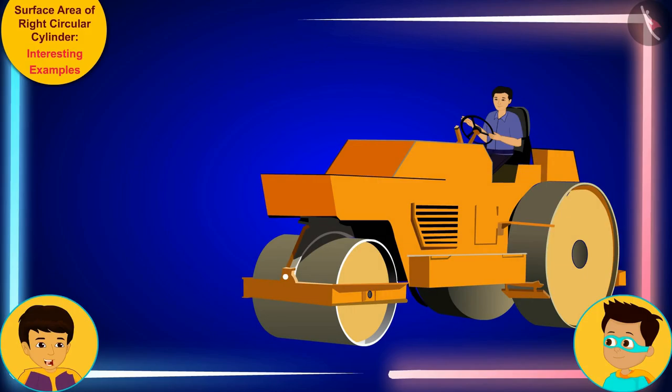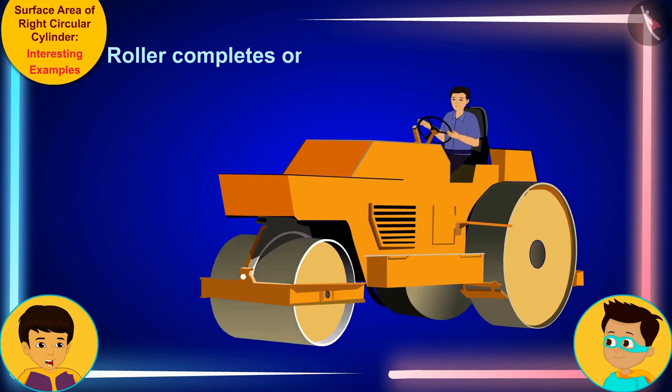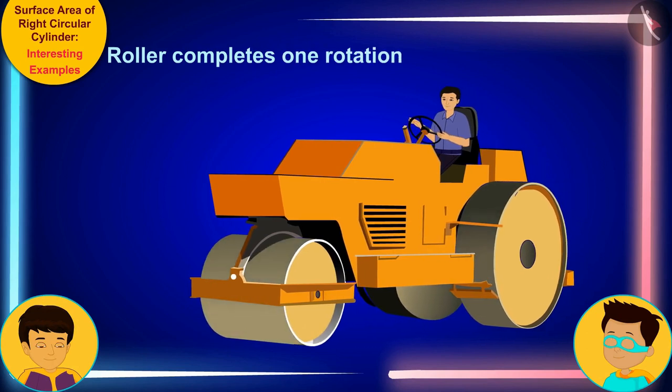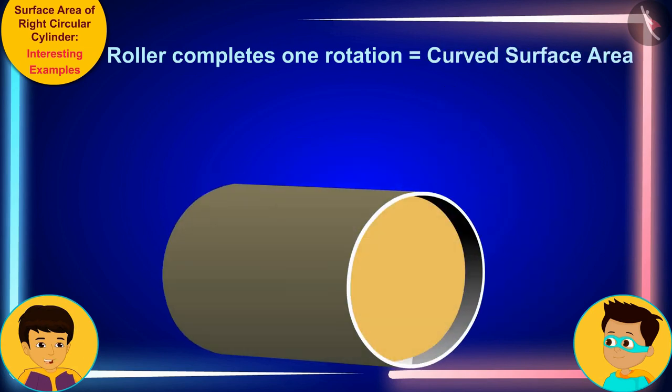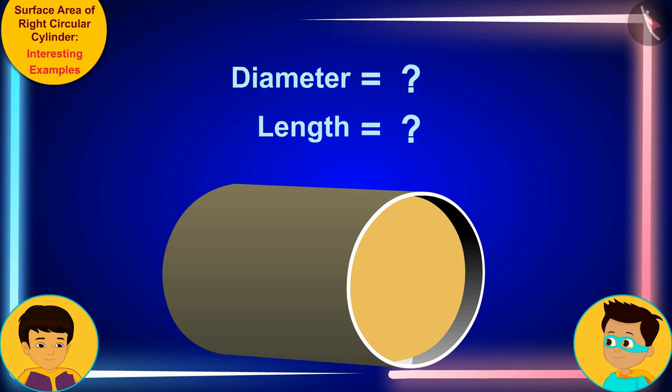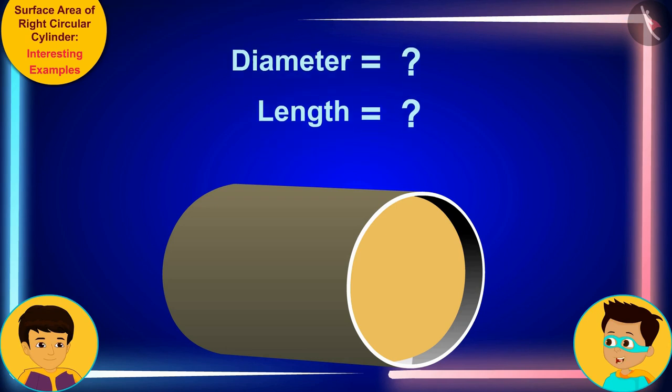Look Thomas, when the roller completes one rotation, it flattens the area of the field equal to its curved surface area. Can you tell me the diameter and length of the roller? The diameter of the roller is 70 centimeters and the length is 100 centimeters.